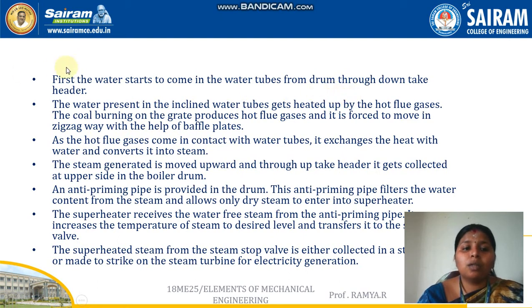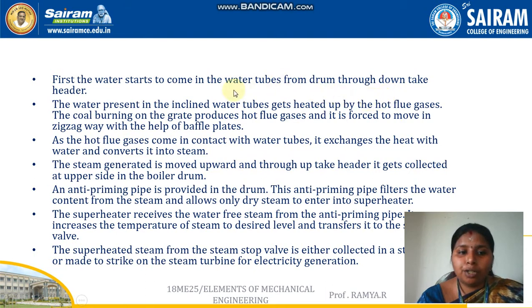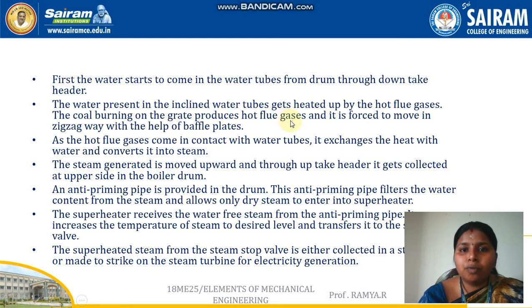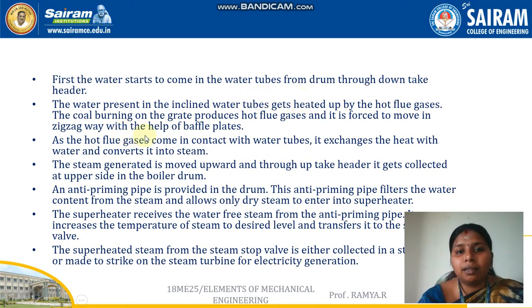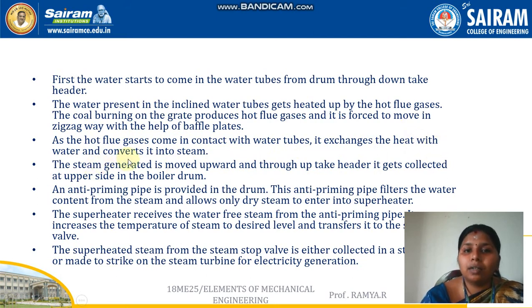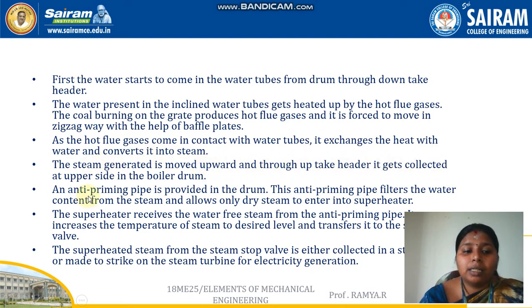Now let's look at how the Babcock and Wilcox boiler works. Water is filled in the drum and passes through the downtake header into the inclined water tubes. The externally fired furnace burns solid fuel to produce hot flue gases, which pass through and around the water tubes. As the hot flue gases contact the water tubes, heat is exchanged and the water inside is converted into steam.